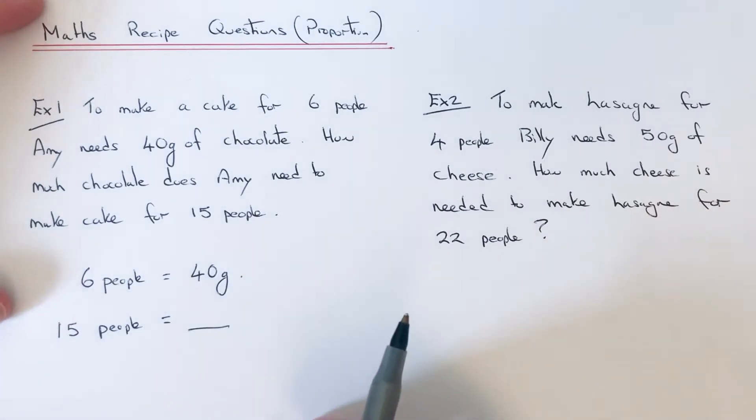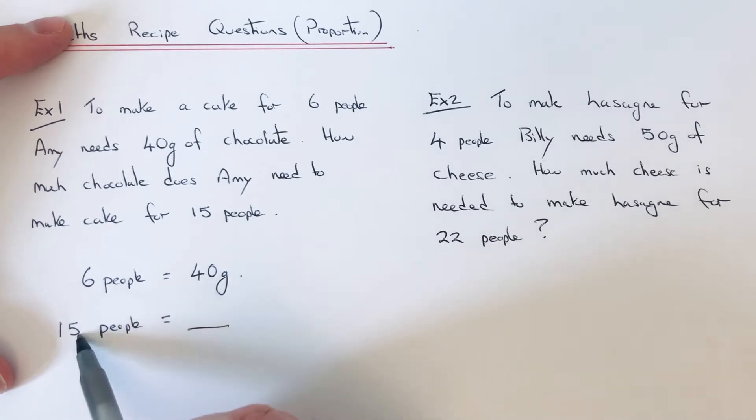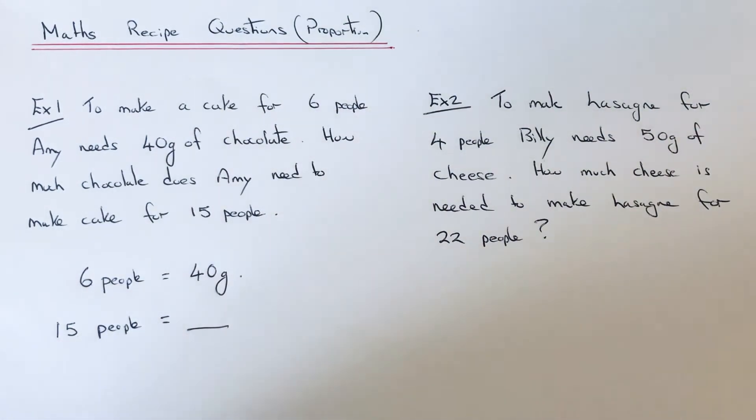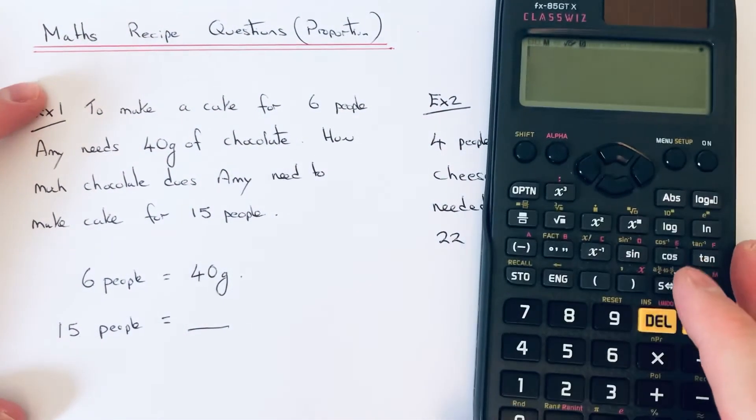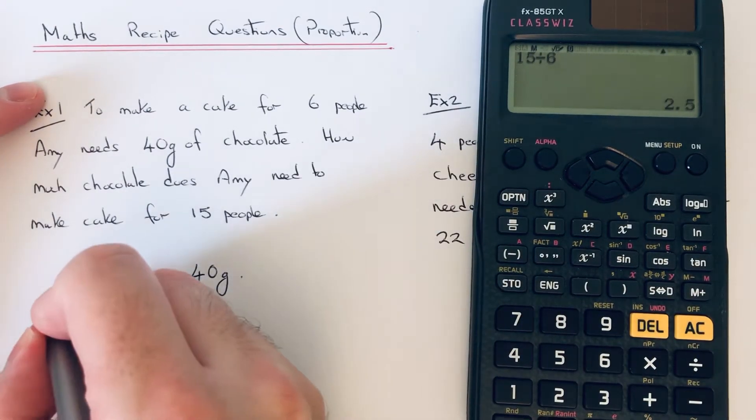We can do this by dividing the 15 by 6. So if you can't do this in your head, you can use your calculator. So 15 divided by 6 is 2.5. So the 15 then is 2.5 times bigger than 6.